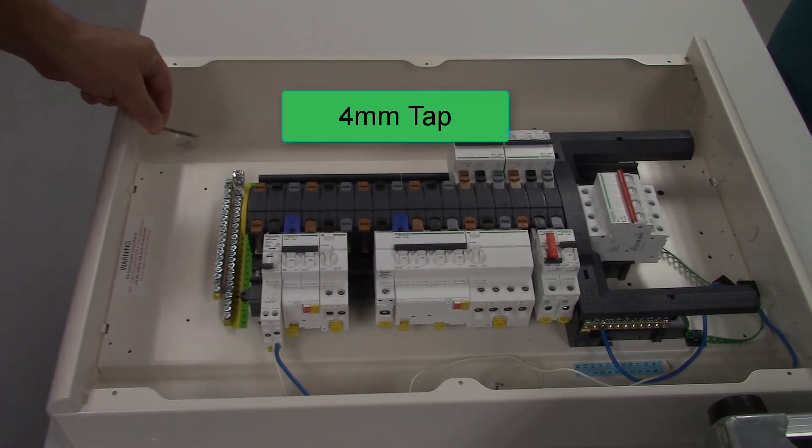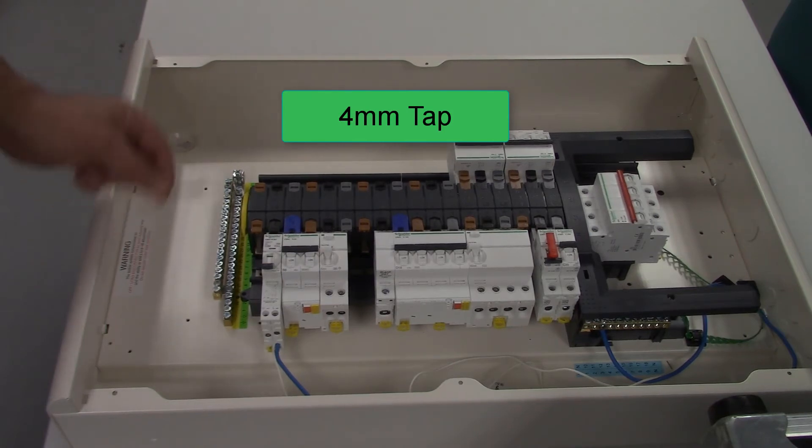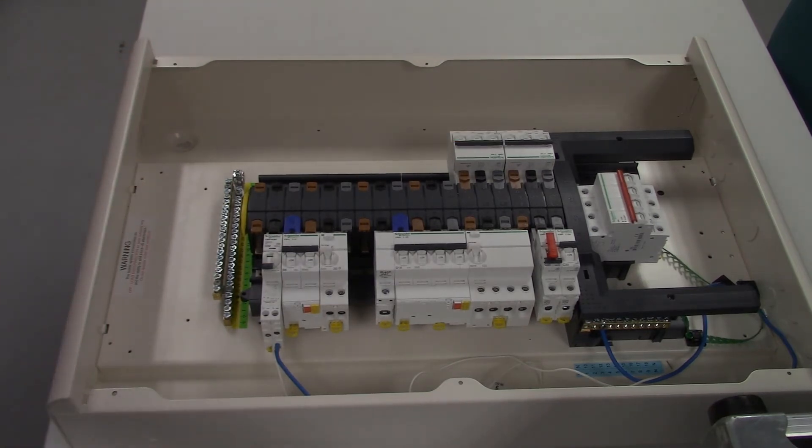Following that up with a 4 millimeter tap, and that will ensure that you can screw safely and have a good connection with the earth of the enclosure.